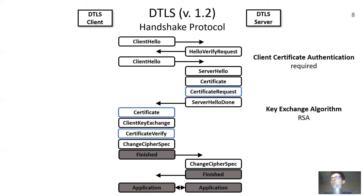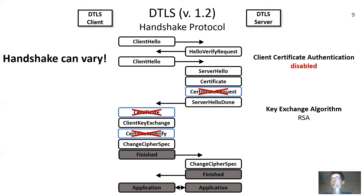DTLS supports several key exchange and client authentication settings. Our example uses RSA key exchange and captures client authentication. Each setting impacts the logical flow of the handshake in its own way. For example, if authentication was disabled, the messages used in client authentication would disappear from the expected handshake. Similarly, if pre-shared keys were used instead of RSA, all certificate messages would be omitted from the expected handshake.